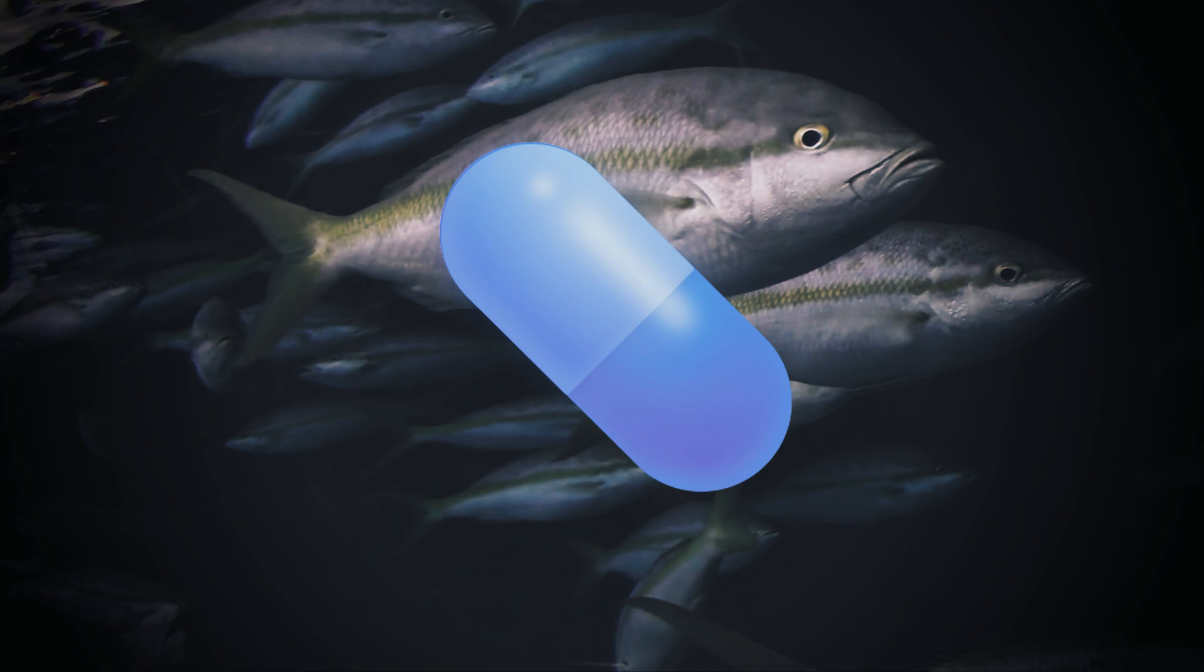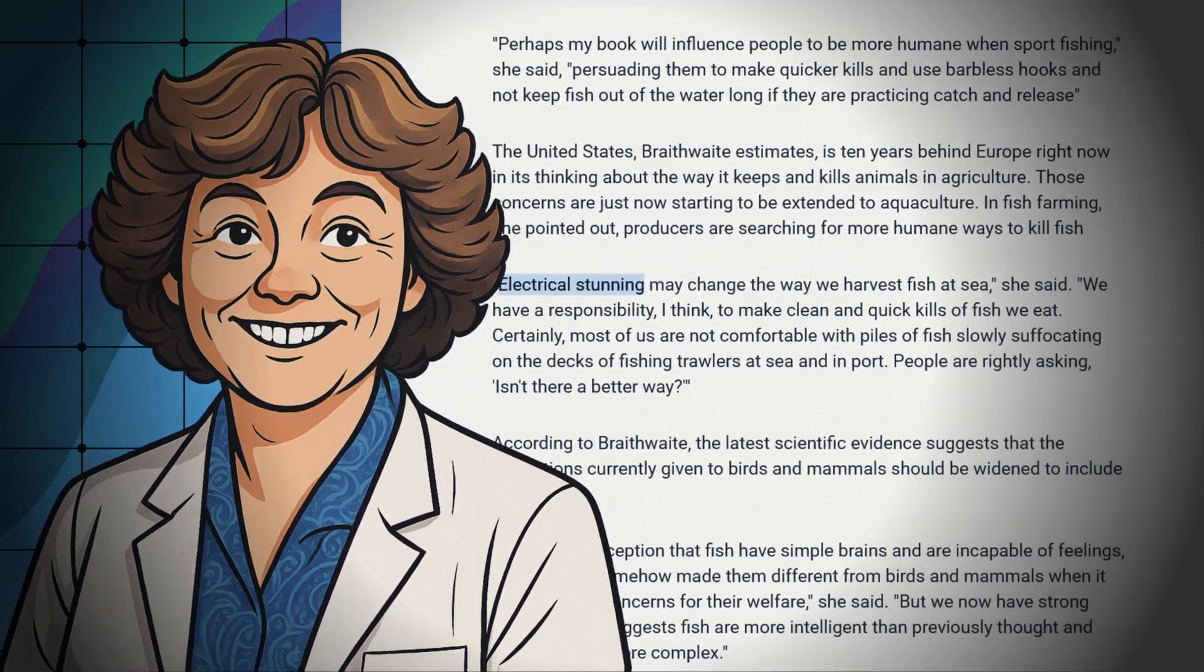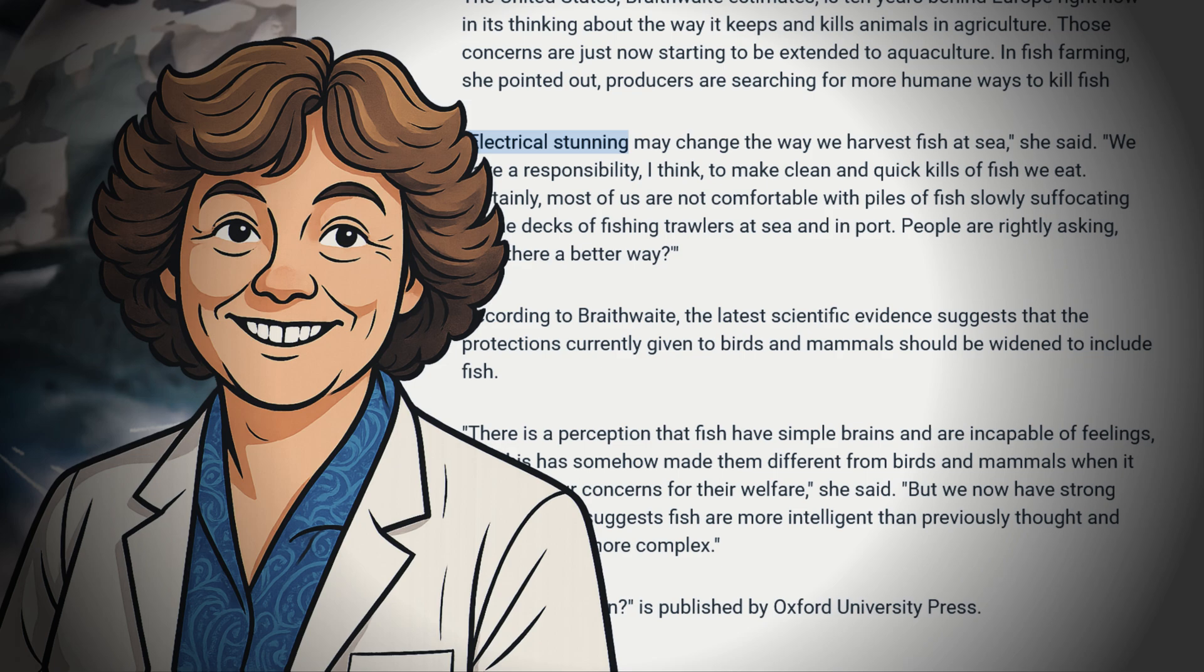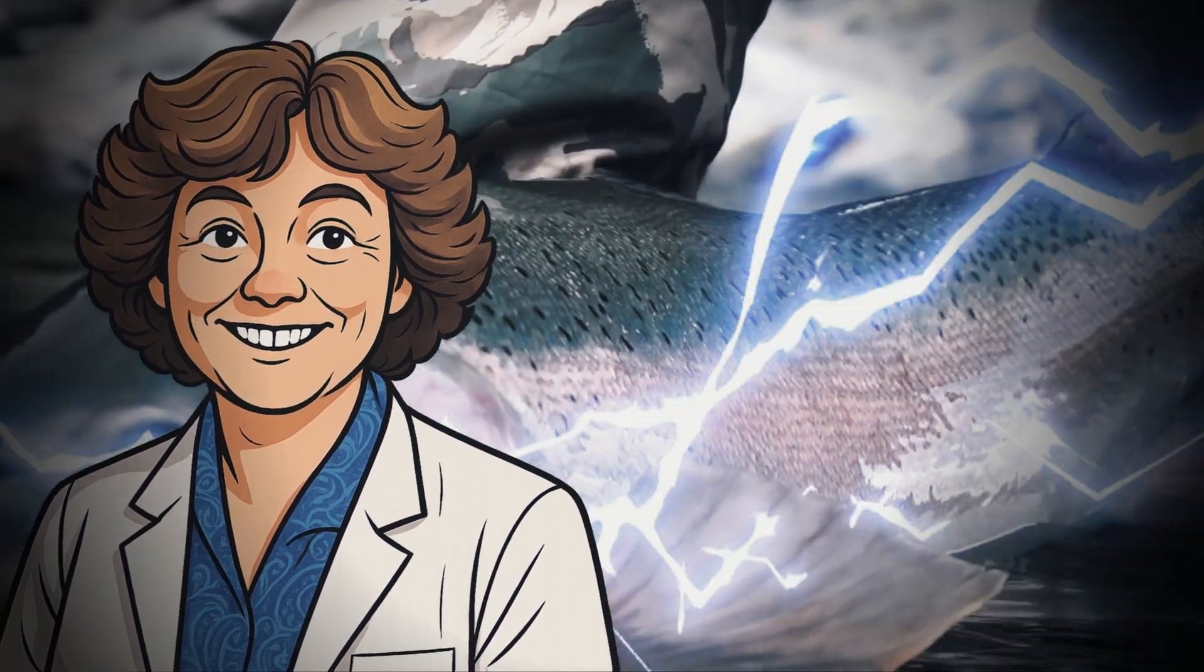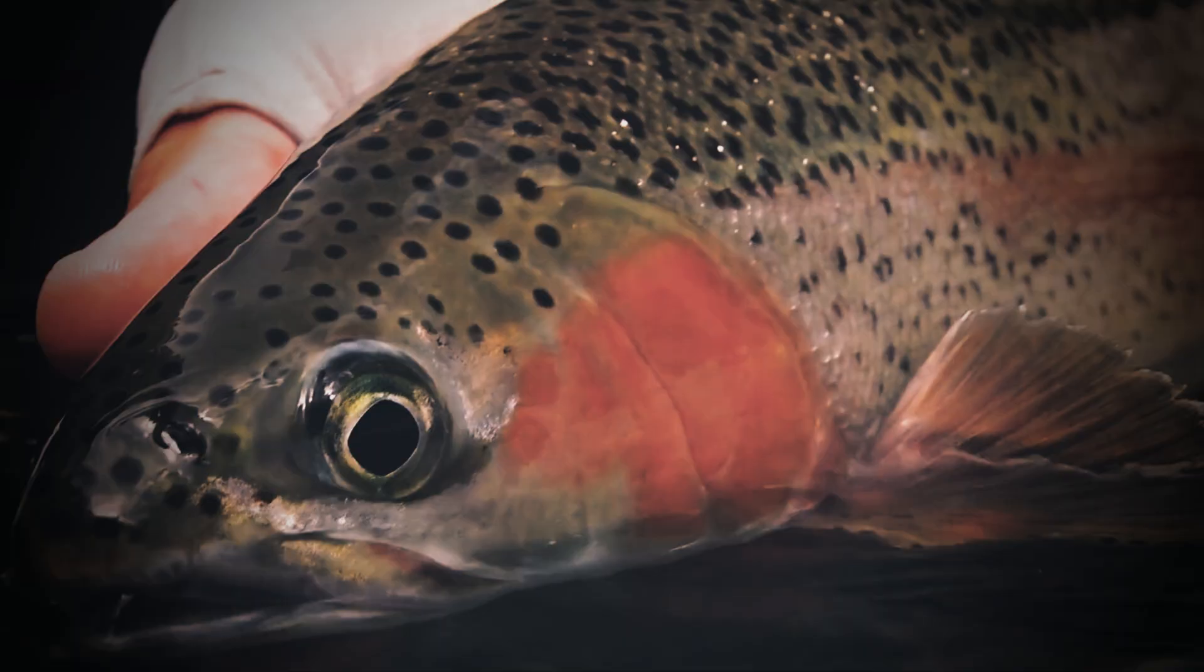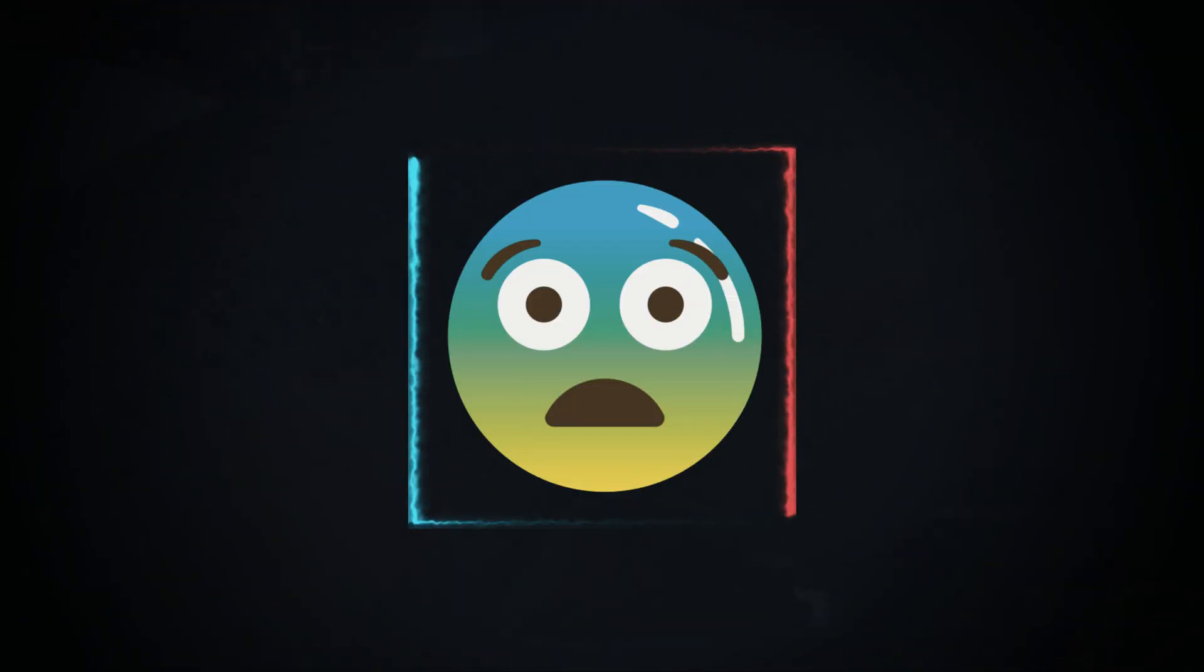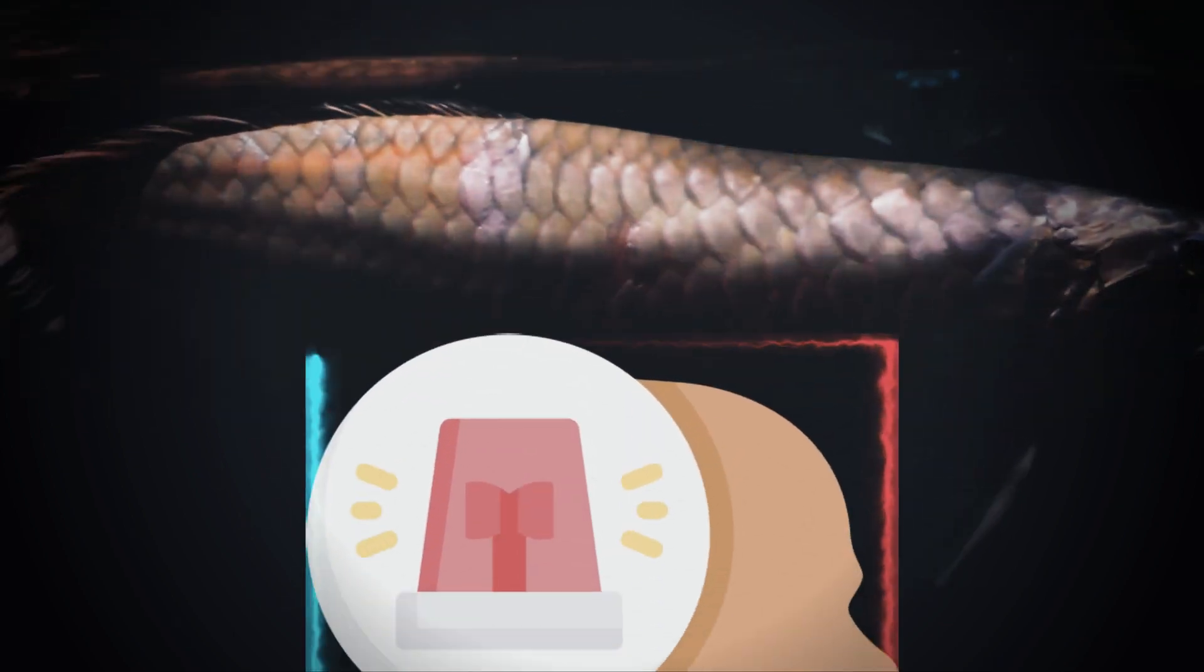Meanwhile, the team of Victoria Braithwaite, one of the key scientists working on fish pain, showed trout can even learn to avoid places where they got zapped before. Which takes more than reflex. It takes memory, decision-making, and maybe even fear. So again, if fish are just reacting, why do they remember pain?